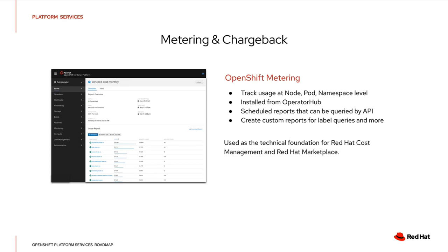Tracking usage across a cluster is important for every business, especially in multi-tenant clusters. OpenShift's metering operator allows cluster administrators to schedule reports and track usage for CPU, RAM, and other metrics as developers consume resources inside their namespaces. Once installed from Operator Hub, new chargeback screens appear in the console. Metering is unopinionated about how data is used, making it perfect for plugging into business intelligence tools. Red Hat also uses metering for two products: Red Hat Cost Management and the Red Hat Marketplace.